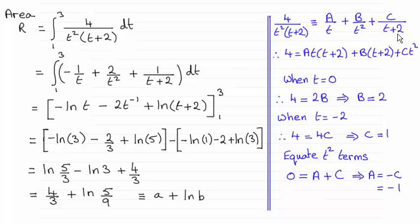And then what I've done is I've multiplied throughout by t squared times t plus 2 to give me what you see here. And then to work out what the various constants are A, B and C, choose appropriate values for t.